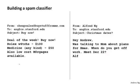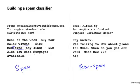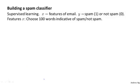Let's say you want to build a spam classifier. Here are examples of obvious spam and non-spam email — the one on the left trying to sell things, and notice how spam sometimes has deliberately misspelled words like 'medicine' with a one and 'mortgages.' On the right is a non-spam email. Let's say we have a labeled training set of spam and non-spam emails, denoted with labels y equals one or zero. How do we build a classifier using supervised learning? We must first decide how to represent x, the features of the email, and then train a classifier such as logistic regression.